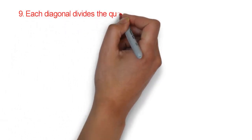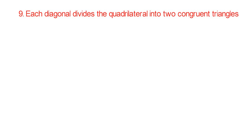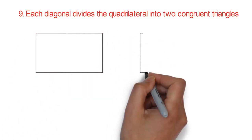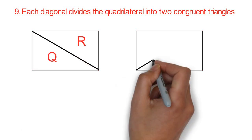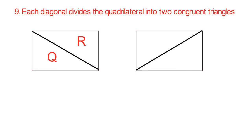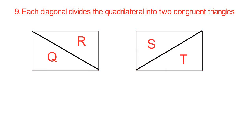Nine: each diagonal divides the quadrilateral into two congruent triangles — congruent triangles means equal triangles. If I draw a diagonal line through the first rectangle, I have two triangles: triangle Q and triangle R. And if I draw another diagonal line, I have triangle S and triangle T. The triangles are equal to each other — triangle Q is equal to triangle R, and triangle S is equal to triangle T.